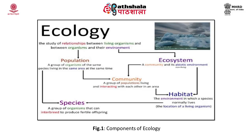Figure 1 also shows the components of ecology, where ecology is divided into population and ecosystem. Groups of populations form communities; communities interact in an ecosystem; communities and species together form the population; species stay in a habitat, and this habitat is part of an ecosystem.